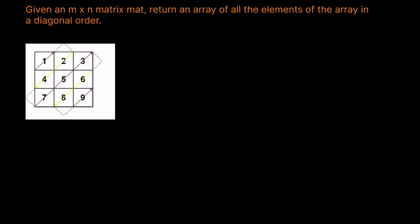So if we see this matrix here, we want to traverse starting at the top left: we want to go 1, then 2, 4, then 7, 5, 3, 6, 8, and 9. So our solution would be 1, 2, 4, 7, 5, 3, 6, 8, and 9.